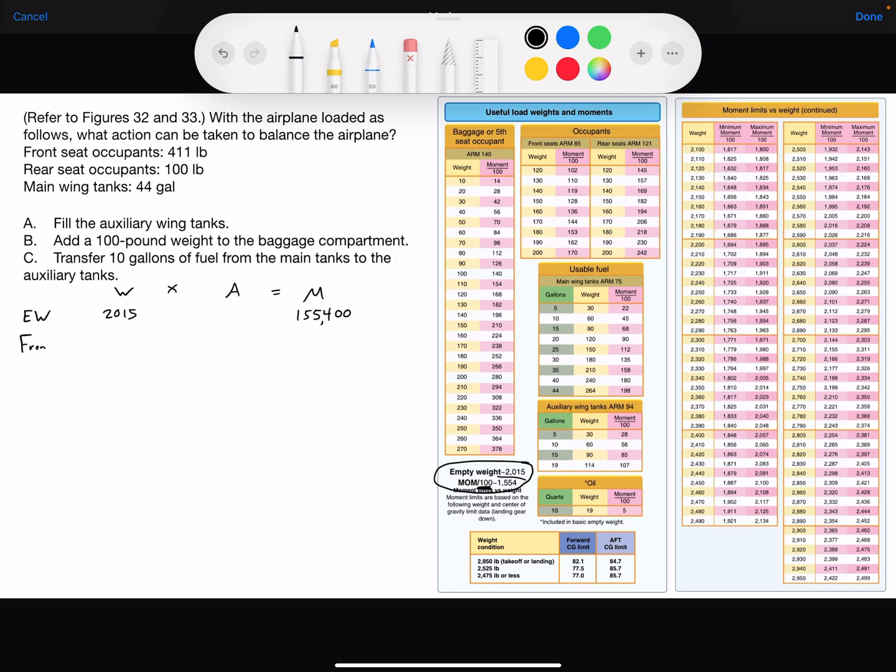In the front seat, we have 411. In the rear, we have 100 pounds. In the main fuel tank, we have 44 gallons. If you multiply it by 6 pounds per gallon, that gives you the weight of 264 pounds of fuel.